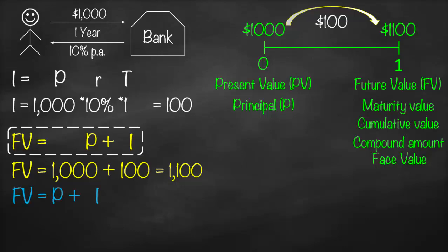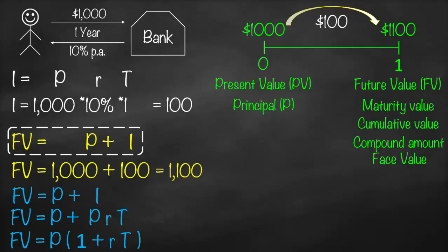We know that future value equals principal plus interest. We also know that our interest amount equals principal times simple interest rate times time. Therefore, we can write our future value as principal plus principal multiplied by simple interest rate multiplied by time. Since principal appears twice, we can take it as a common factor. Therefore, future value equals principal multiplied by open bracket — one plus RT — close bracket. This is our second formula to calculate future value when we don't have the interest amount.